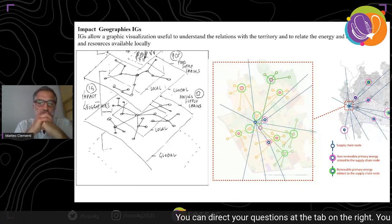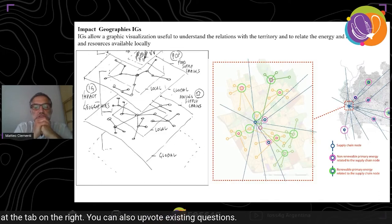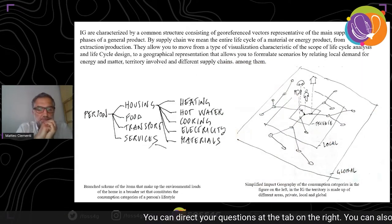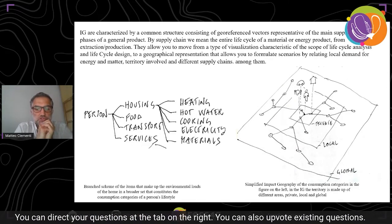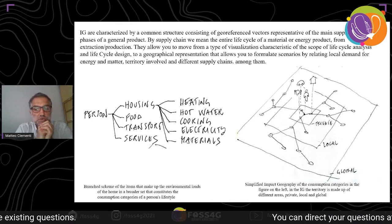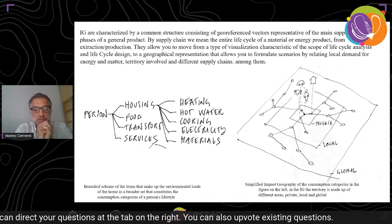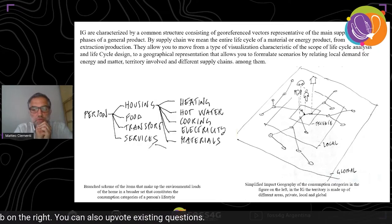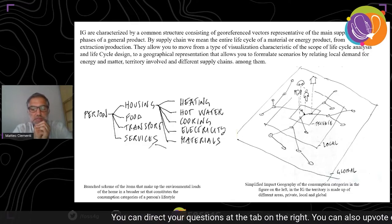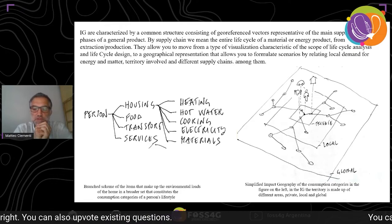Impact geographies allow graphic visualization useful to understand relationships with the territory and to relate energy and matter demand with locally available resources. They are characterized by a common structure consisting of georeferenced vectors representative of the main supply chain phases of a generic product. By supply chain, we mean the entire life cycle of a material or energy product from extraction to production and disposal. They allow moving from visualization characteristic of life cycle analysis to geographical representations that allow formulating scenarios by relating local demand for energy and matter, territory involved, and different supply chains among them.